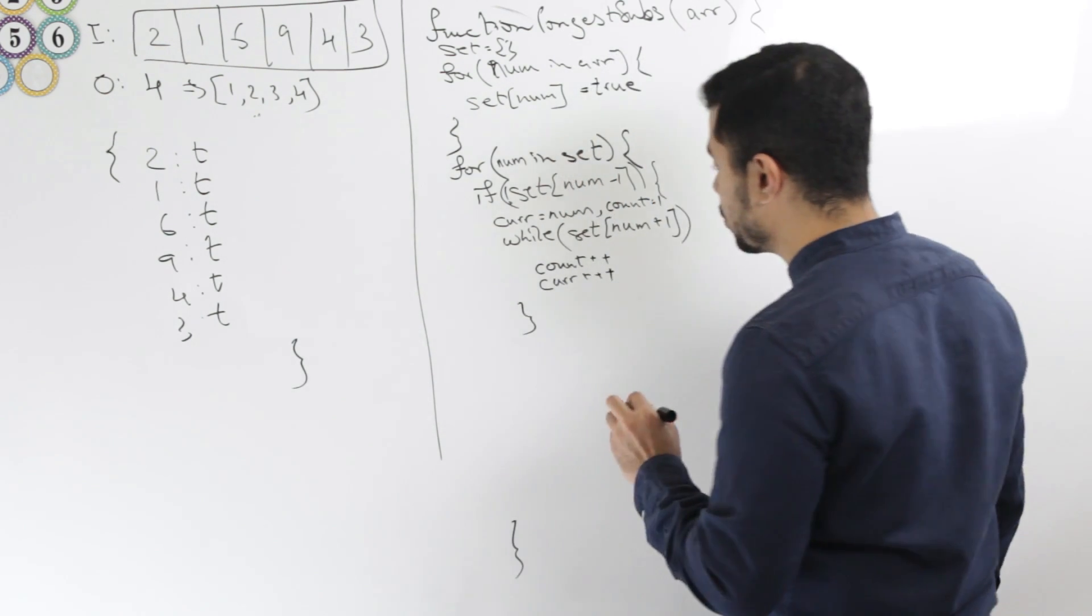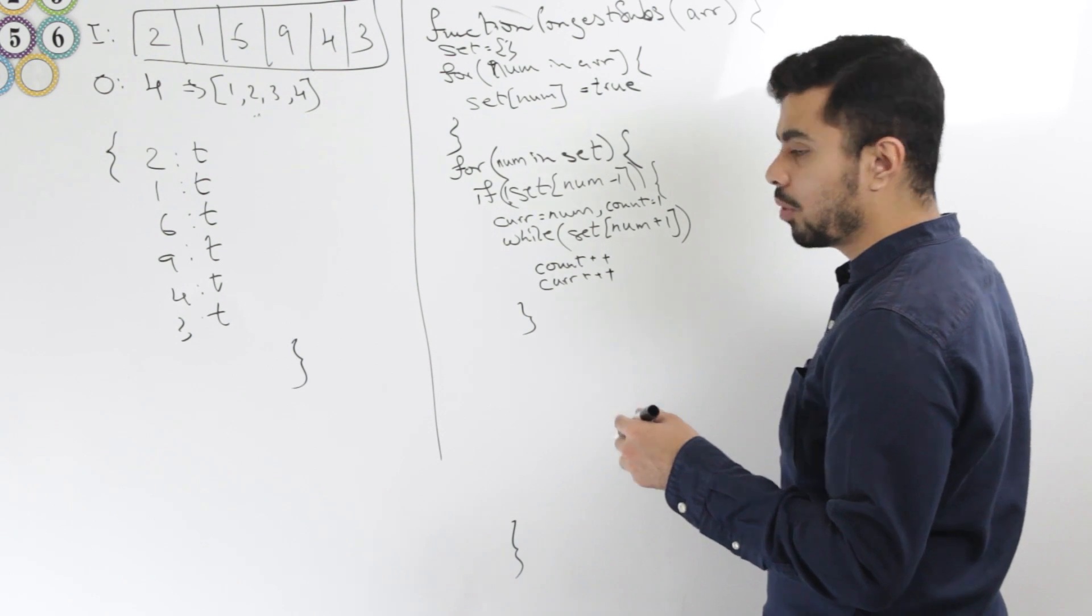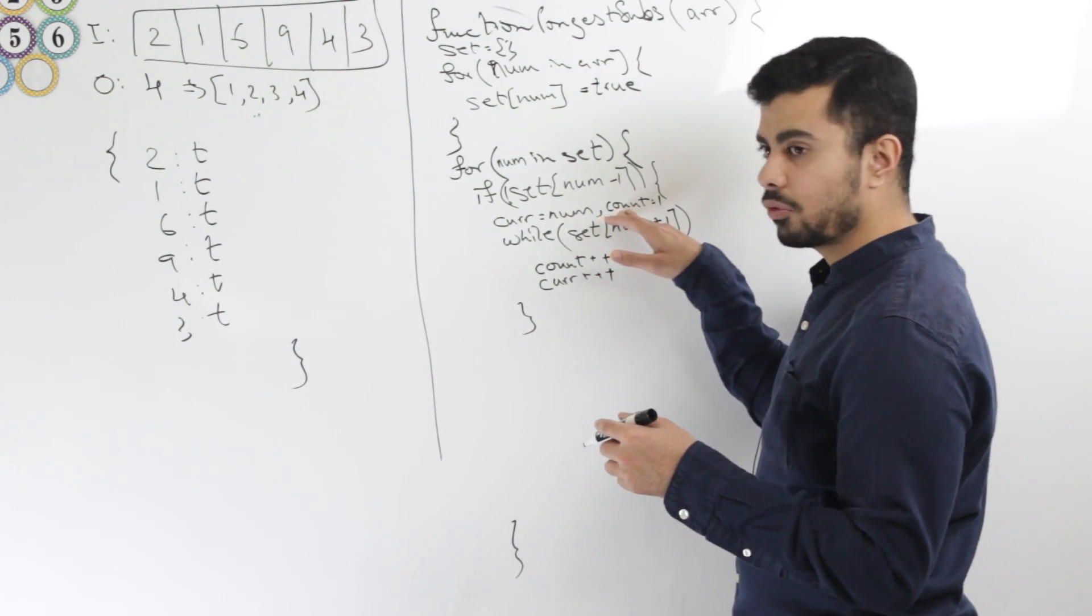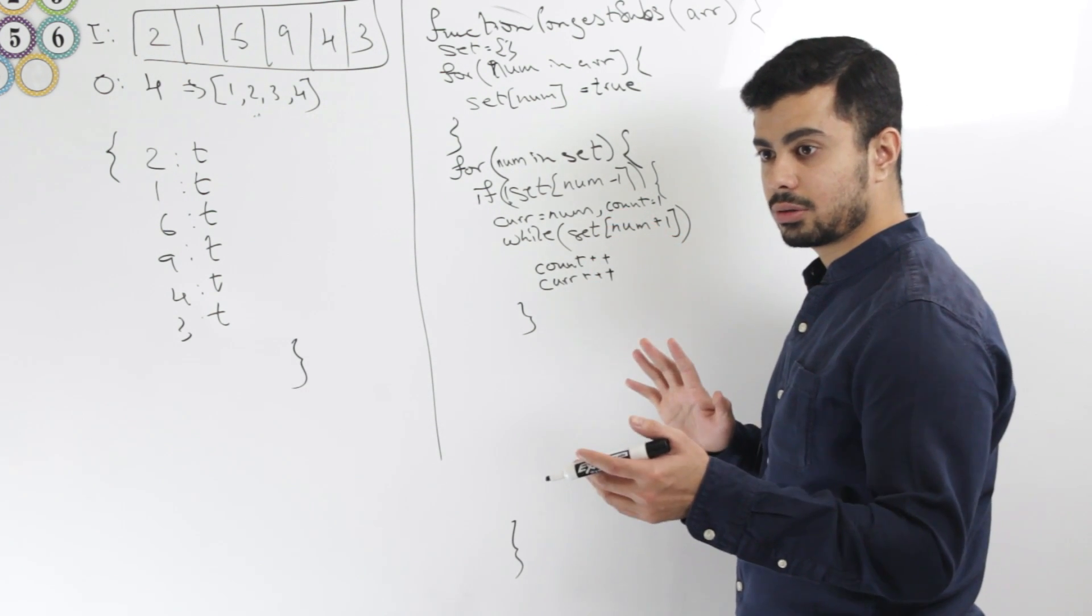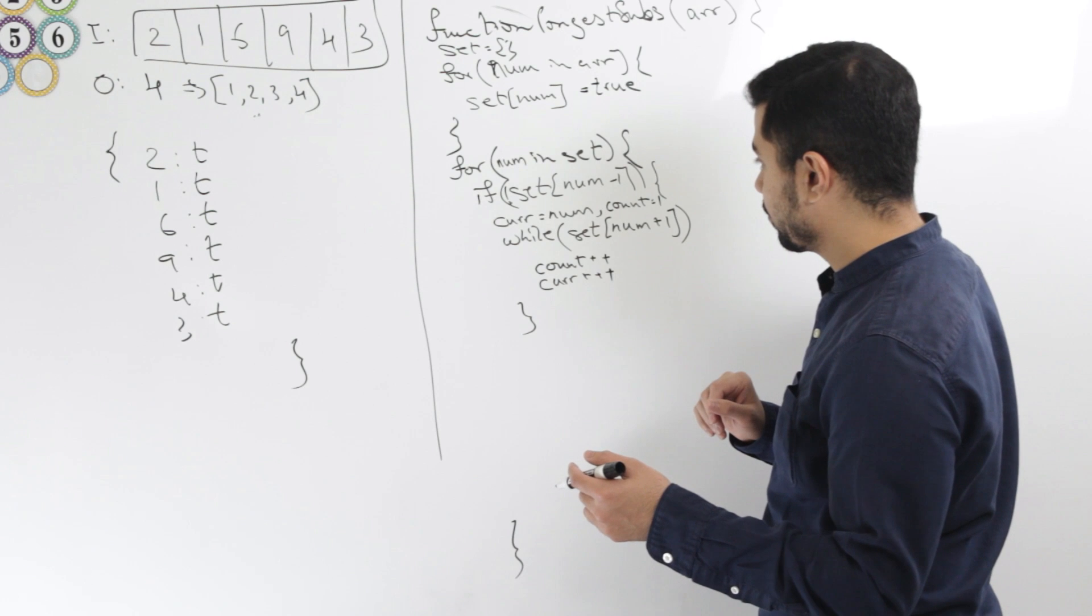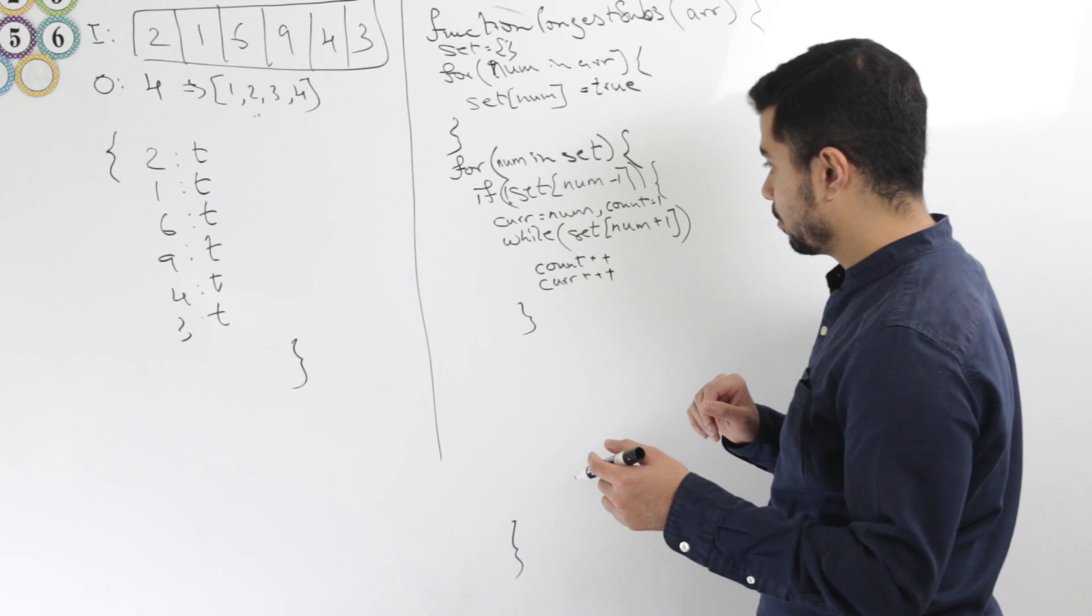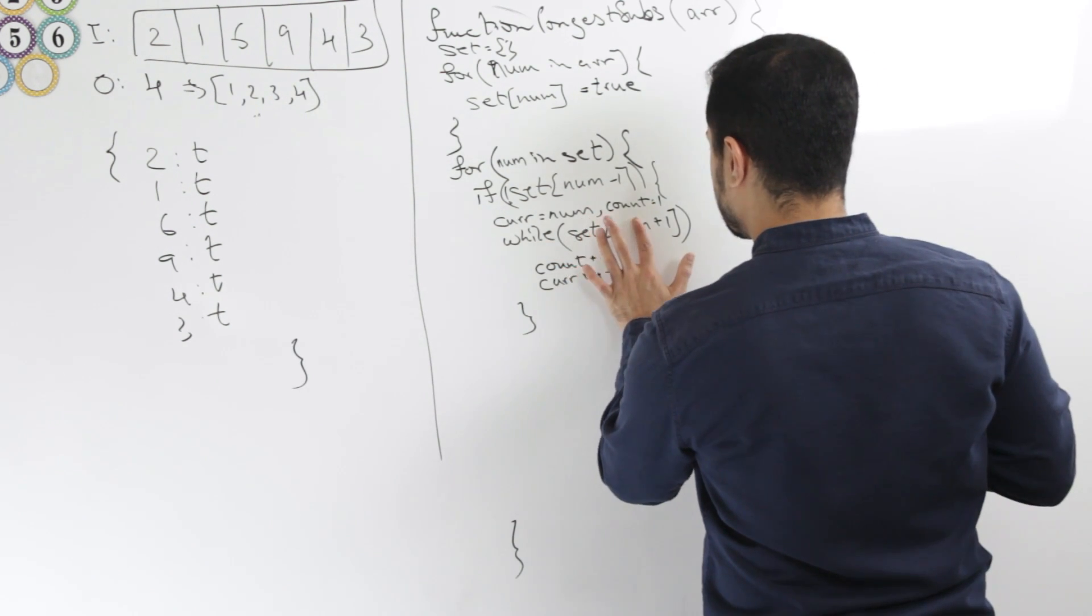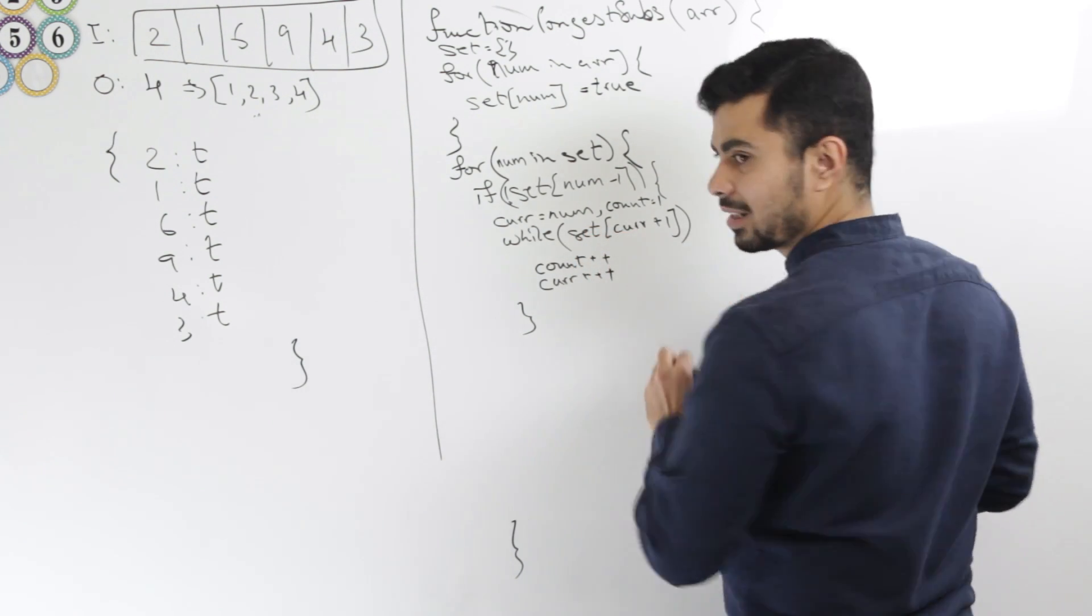And that's it. So after I'm done with the while loop, I know that I need to check whether my current longest or the count over here is greater than the longest of sequence that I have up till now. Sure, but in your while loop, you're checking for num plus one, but you're only modifying the curr variable. Oh yes, you're right. I should actually check for curr plus one, not num plus one. Good point.